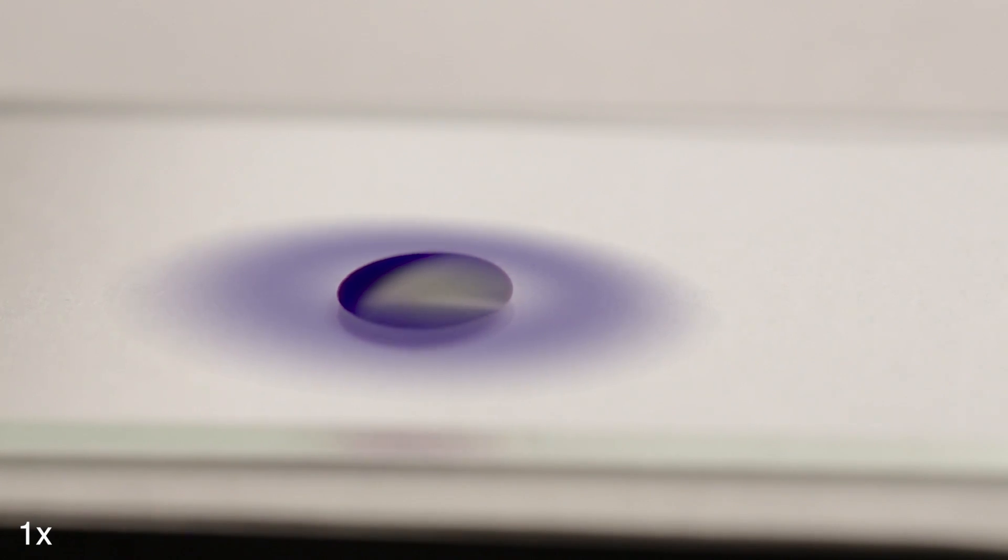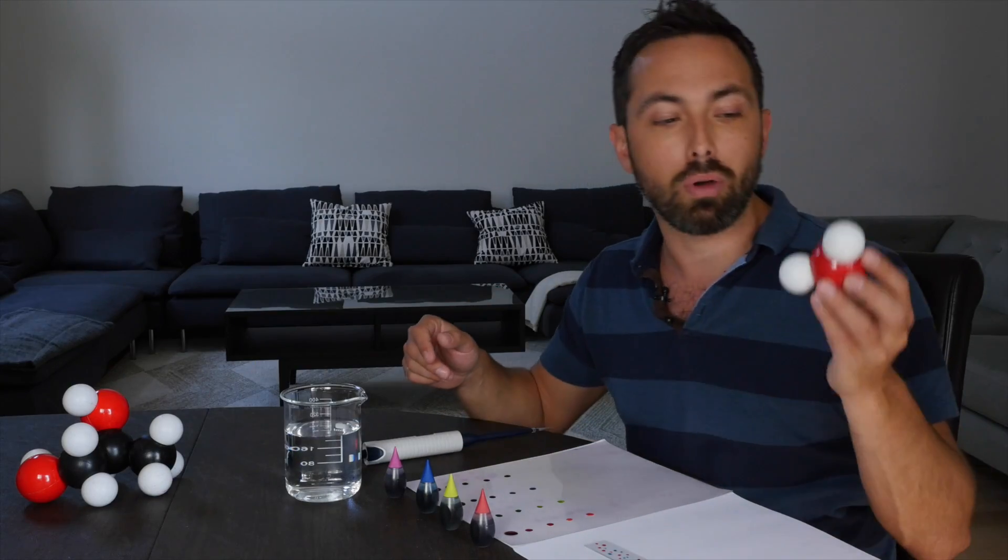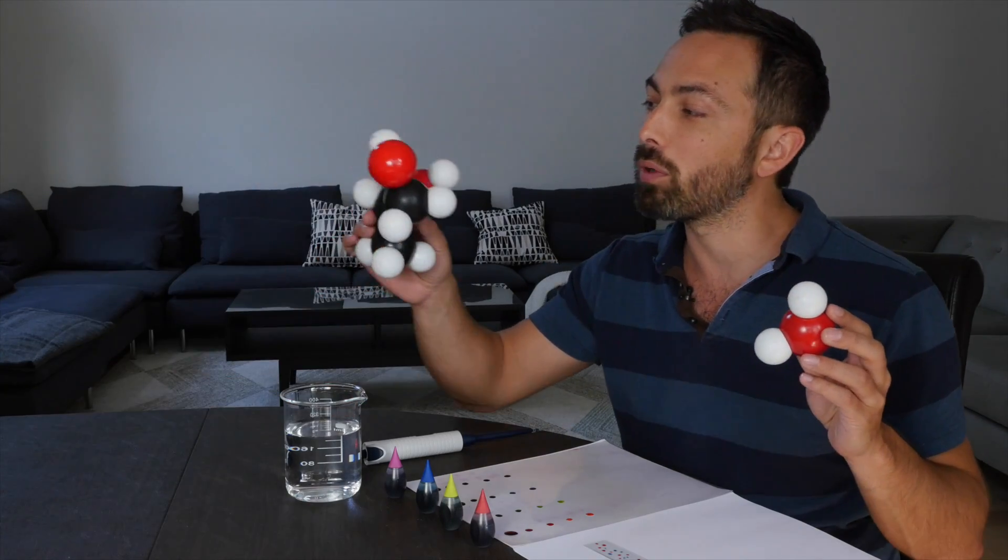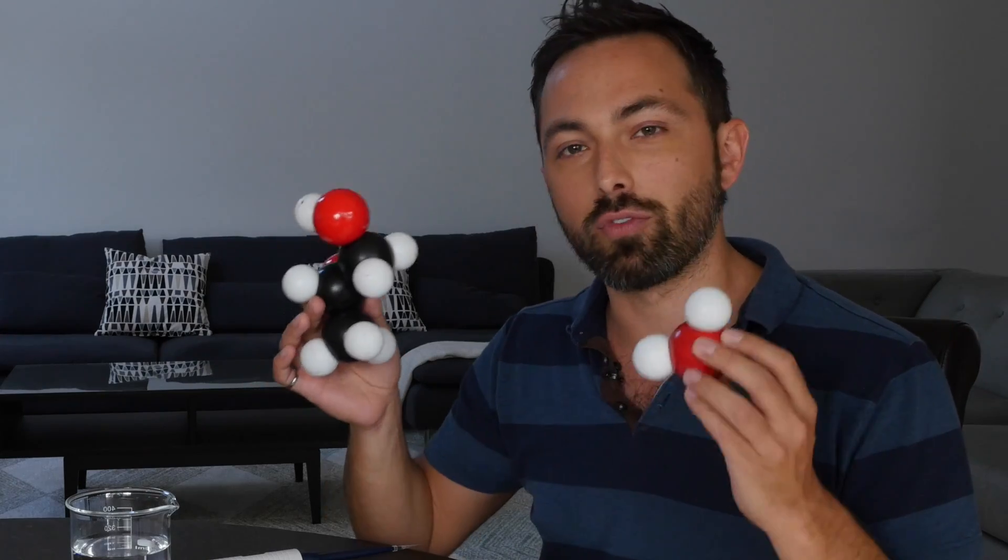But that's not the whole story. Food coloring is a mixture of mainly two molecules, water and propylene glycol. These two liquids mix well, so we say they are miscible, but they have different properties.